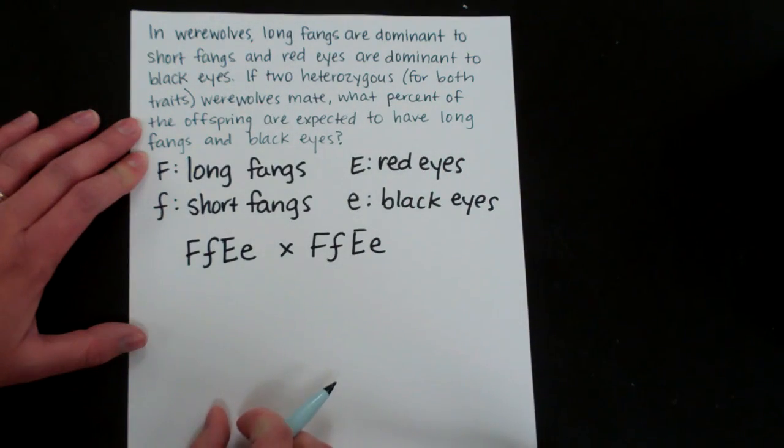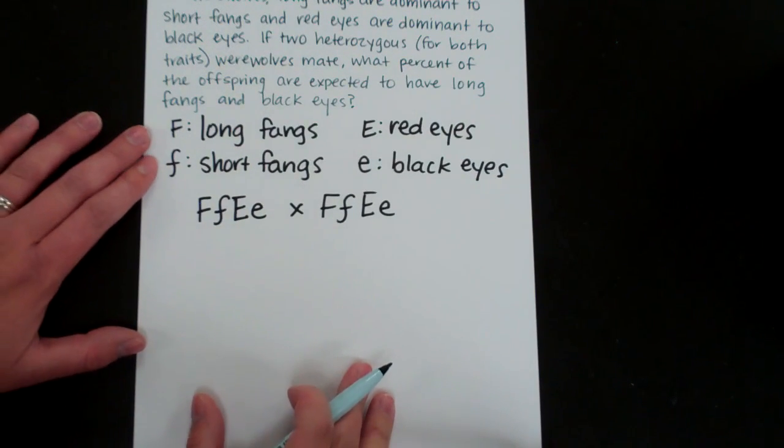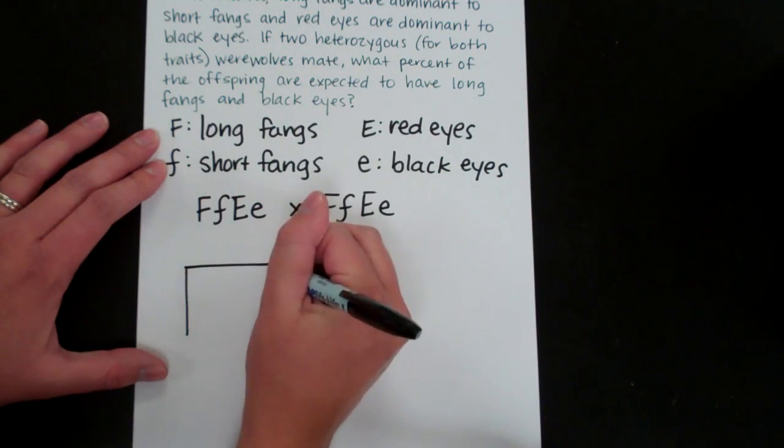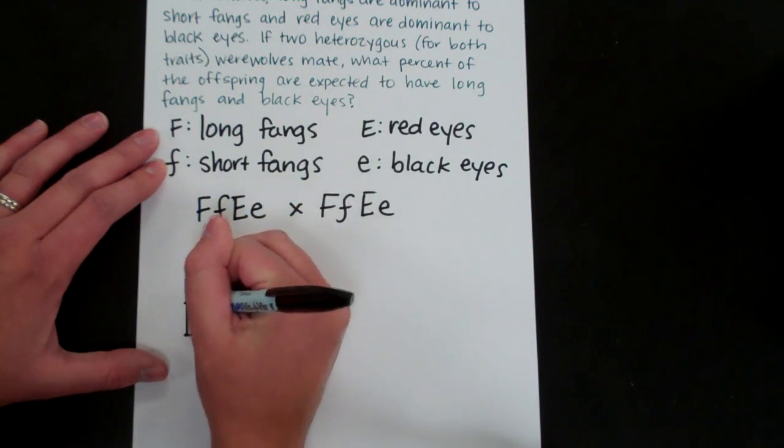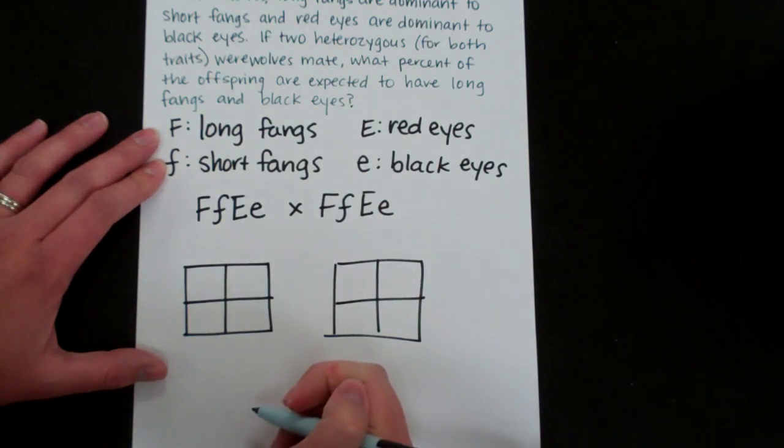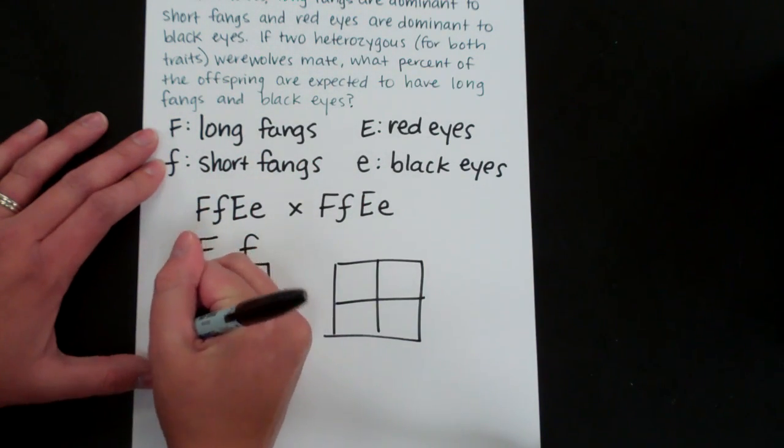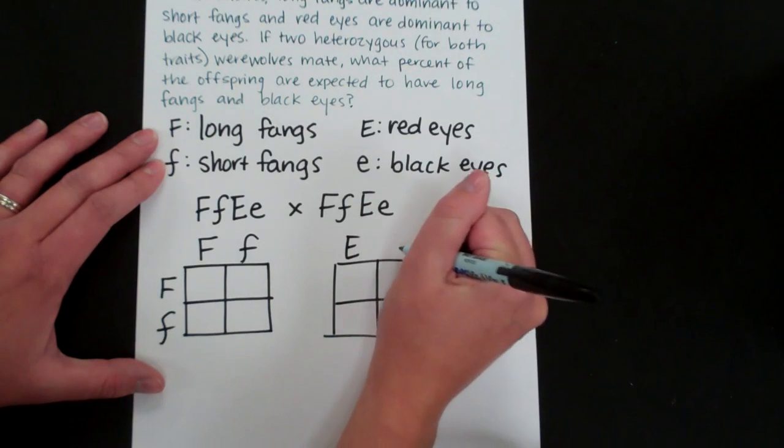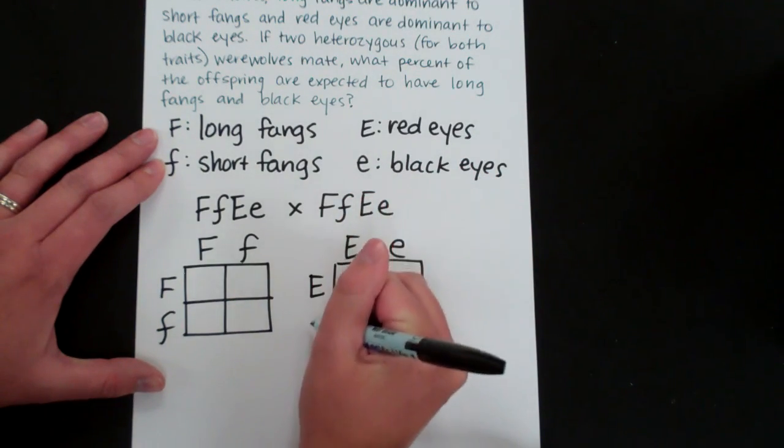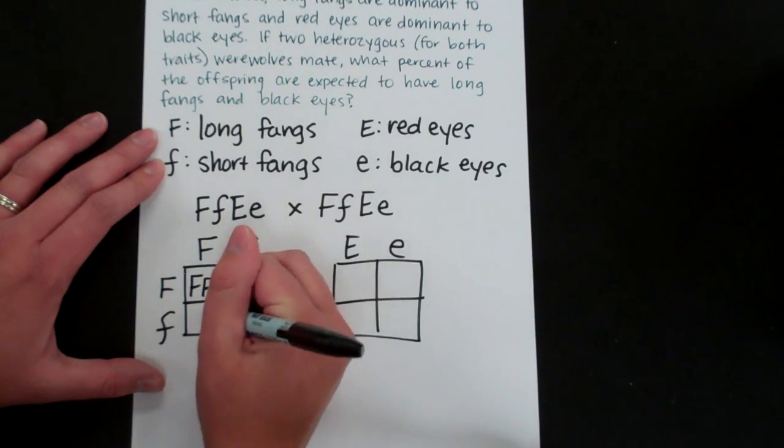So what we're going to want to do is do a Punnett square for the F's and then do a Punnett square for the E's. So let's do our F's. Again both parents are heterozygous and then do one for the E's. So this is a part that you've done before.